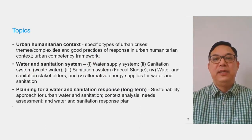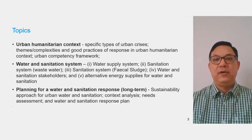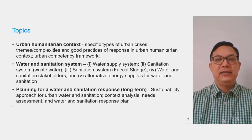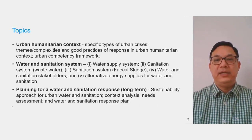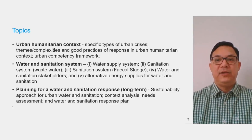This course has been divided into three major topics. The first is Urban Humanitarian Context, where you will learn about major humanitarian crises affecting urban areas and look at six specific types of urban crisis. You will explore several complexities and themes within urban humanitarian context in contrast with rural or refugee settings, as well as good practices of response in urban context. Finally, you will learn about the Urban Competency Framework, which comprises 12 behavioral and professional competencies.